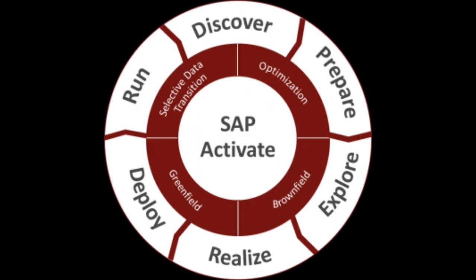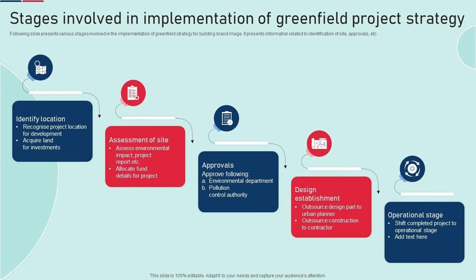Implementation Steps. Project Preparation: Define project scope, objectives, and timelines. Assemble a project team with the required skills and expertise. Business Blueprint: Collaborate with business stakeholders to gather and document requirements. Create a detailed business blueprint outlining processes and system requirements. System Installation and Setup: Install the SAP S/4HANA system and configure basic settings. Plan the system landscape and setup integrations.